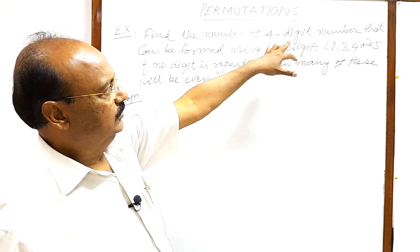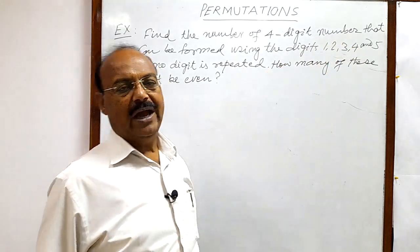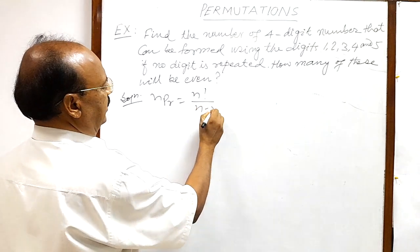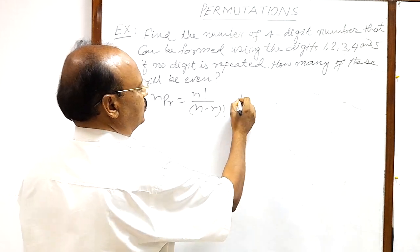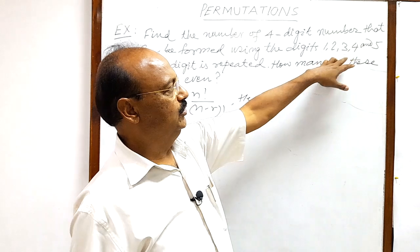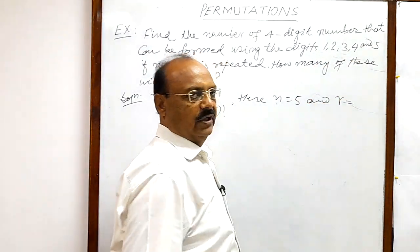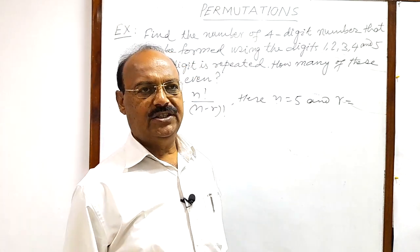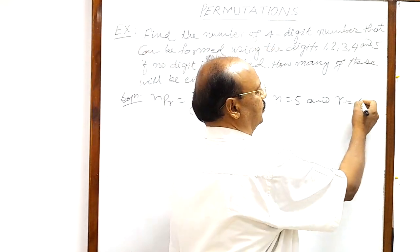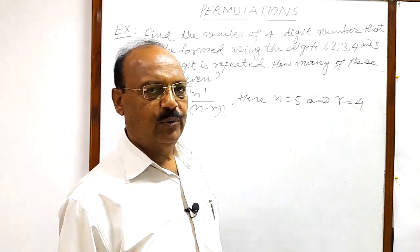For forming four-digit numbers out of these five digits, we use the formula nPr = n! / (n - r)!. Here n is equal to 5, the total number of objects, and r is equal to 4, the number of objects we have to select and arrange at a time.